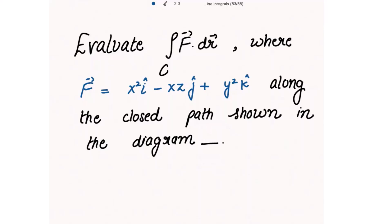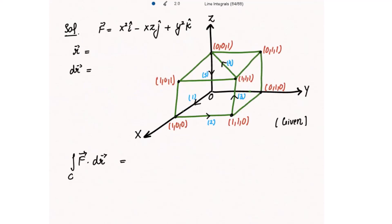We need to evaluate the line integral of the dot product of F vector with dr vector, where F vector is given. We evaluate this integral along the closed path shown in the diagram, with all paths marked in blue numbered first through fifth. F vector is given and since it is the xyz plane, our r vector is taken as xi cap plus yj cap plus zk cap.